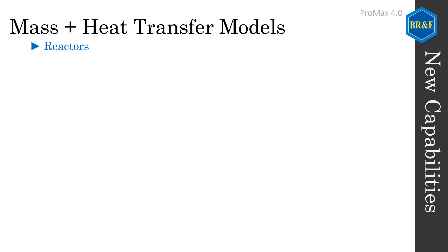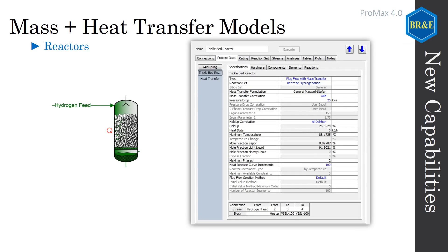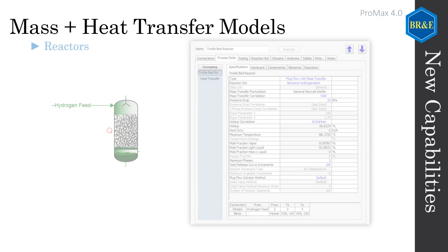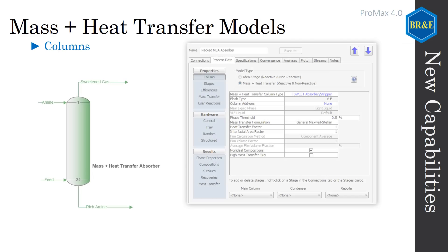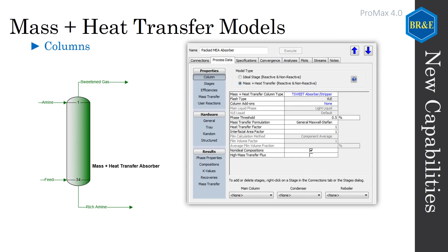We are also proud to announce our PROMAX mass and heat transfer models with PROMAX 4.0, a powerful addition to our reactors and columns. Plug flow and stirred tank reactors can utilize our mass and heat transfer models for greater flexibility in simulation, and can also be used to effectively simulate co-current towers and single separators. For distillation towers, these new models allow column dimensions such as height of packing or number of trays combined with the type of mass transfer occurring to predict results from rate-dependent processes.